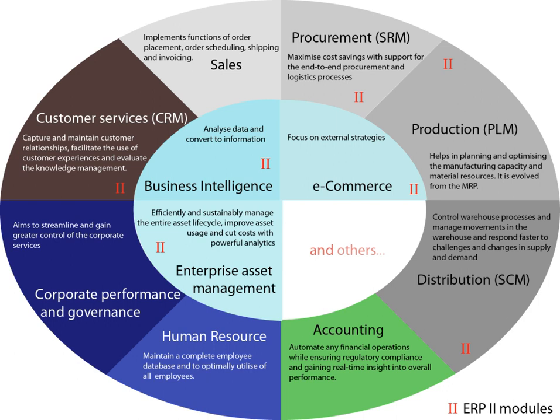ERP scope usually implies significant changes to staff work processes and practices. Generally, three types of services are available to help implement such changes—consulting, customization, and support. Implementation time depends on business size, number of modules, customization, the scope of process changes, and the readiness of the customer to take ownership for the project. Modular ERP systems can be implemented in stages. The typical project for a large enterprise takes about 14 months and requires around 150 consultants. Small projects can require months; multinational and other large implementations can take years.